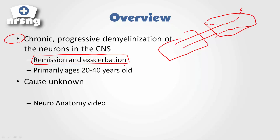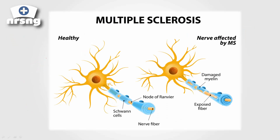MS is most often going to occur in patients who are between 20 to 40 years old. The cause is completely unknown. It is a chronic progressive demyelination of the neurons, and it goes through remission and exacerbation phases.